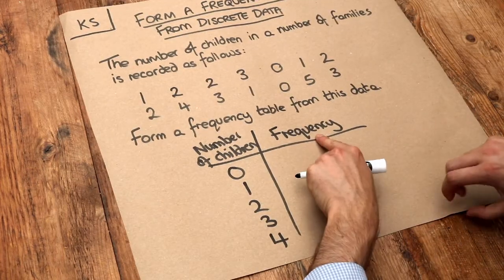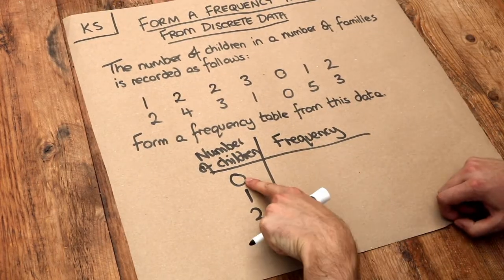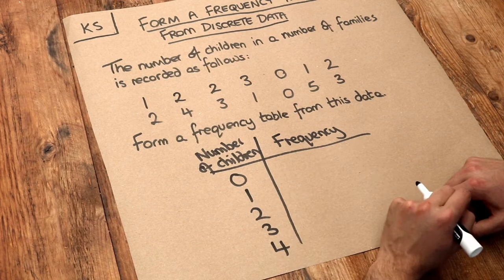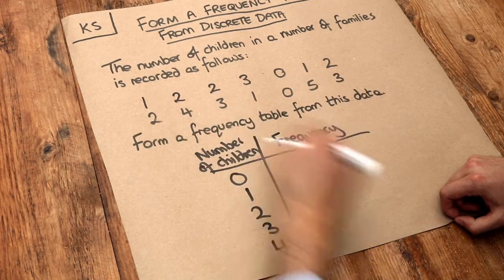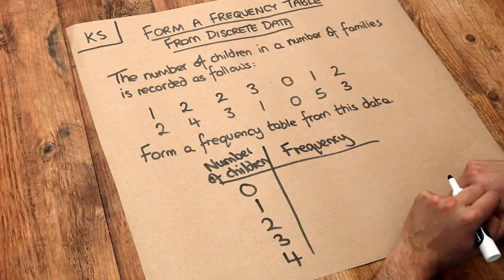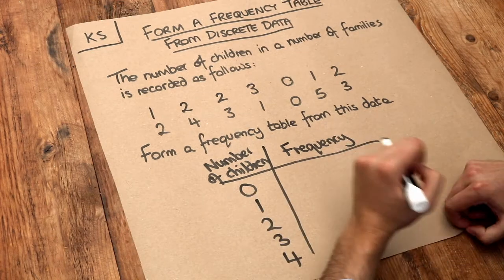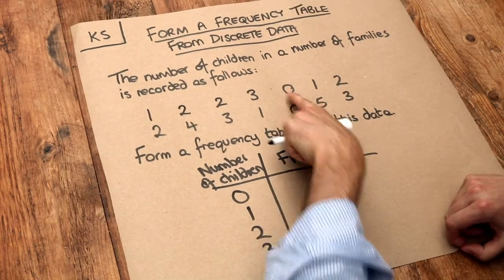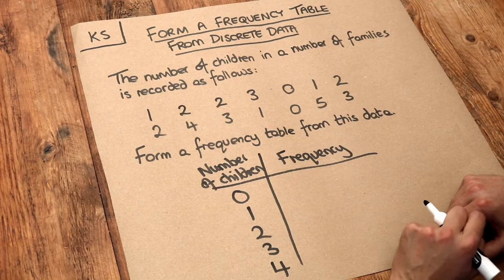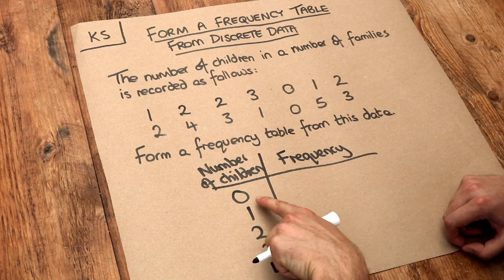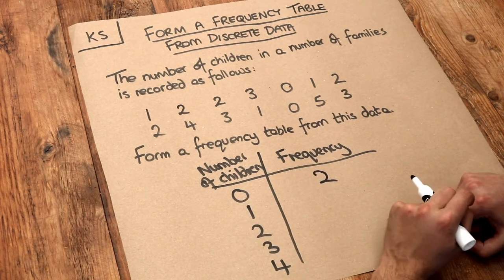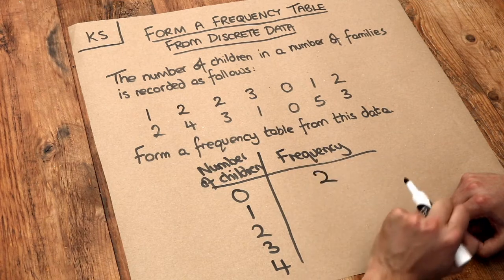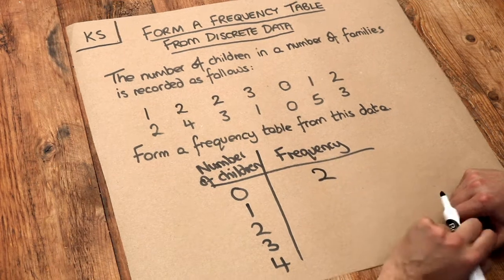The frequency is going to say how common that number of children is. So how many of these families have zero children? How common is that value of zero? Well, we can see that zero children occurs twice. So there are two families with zero children — the frequency is two.